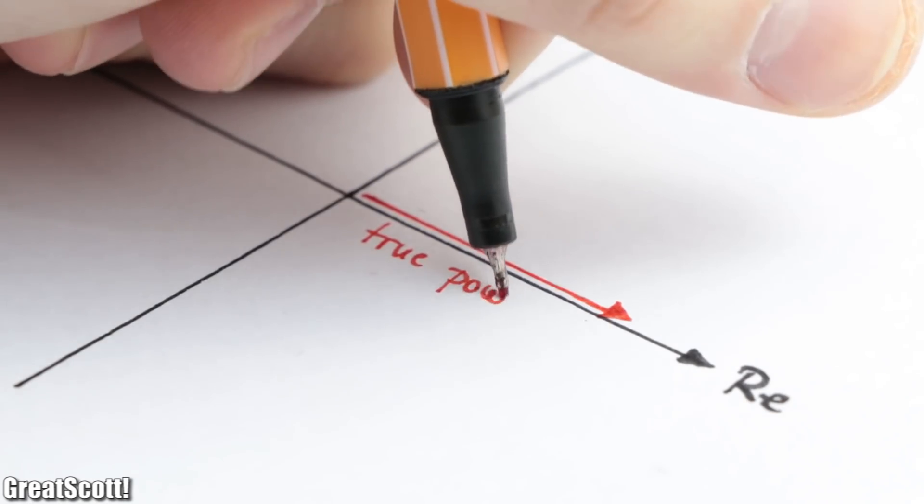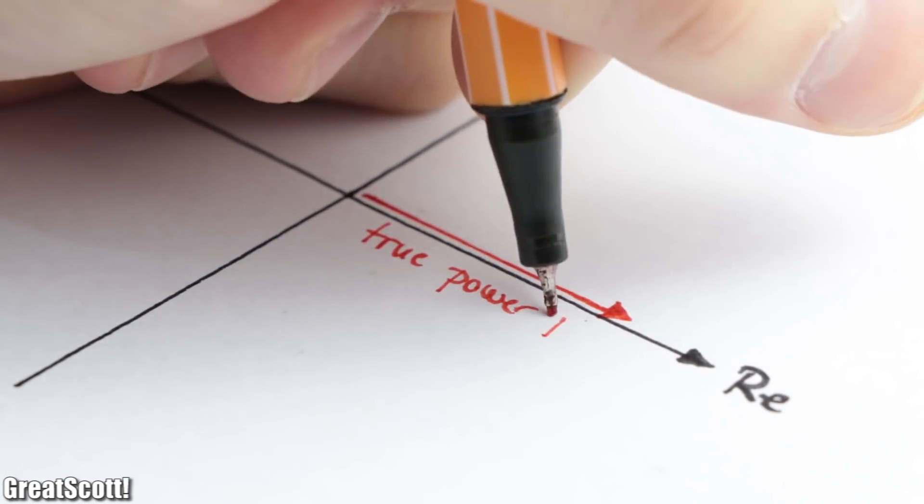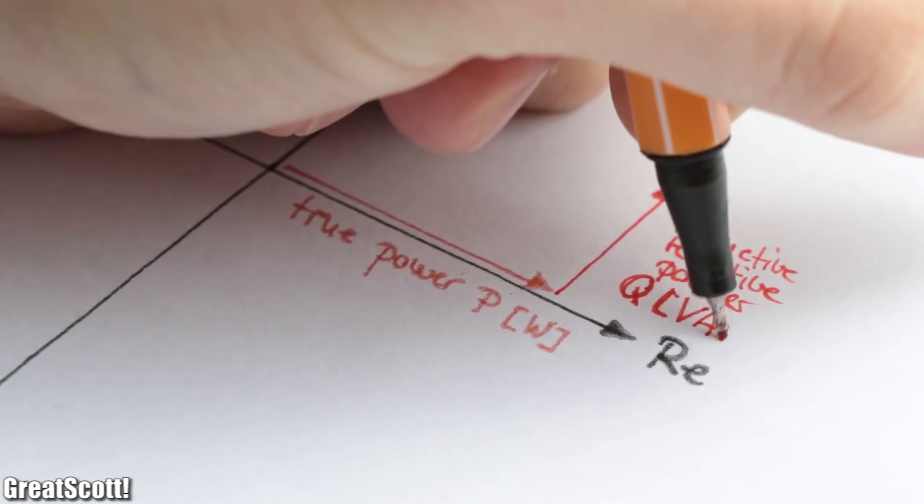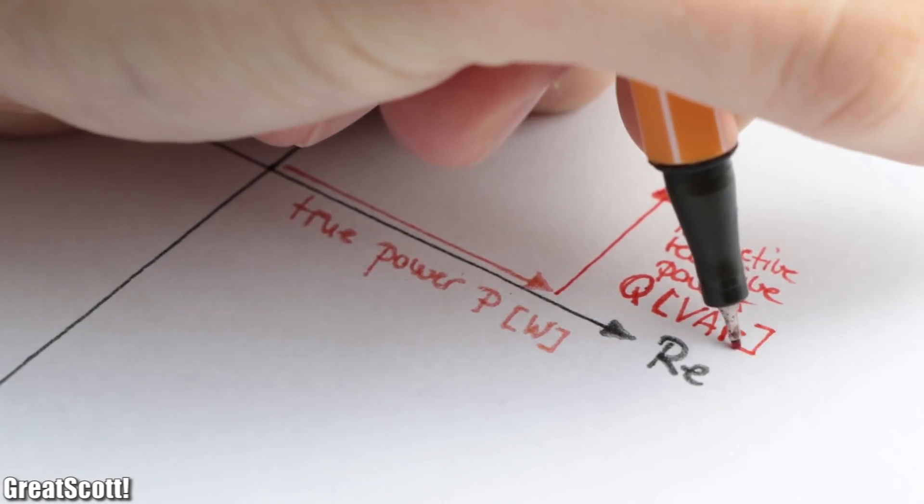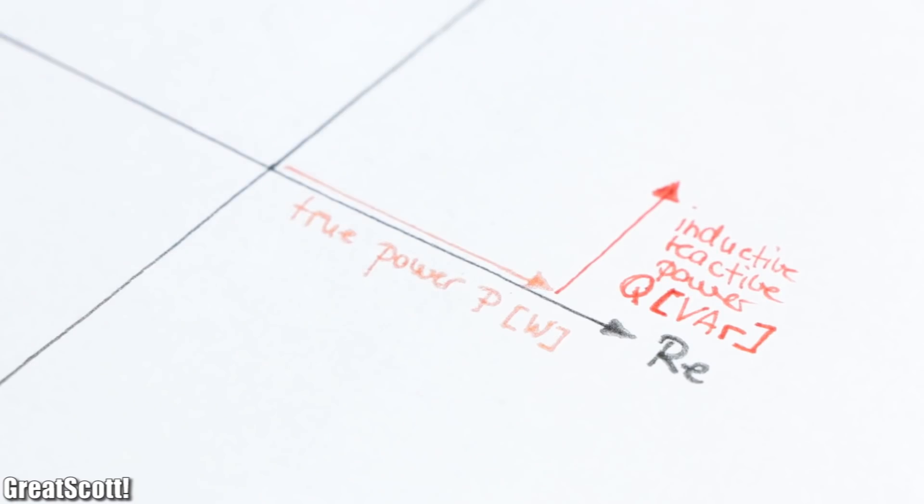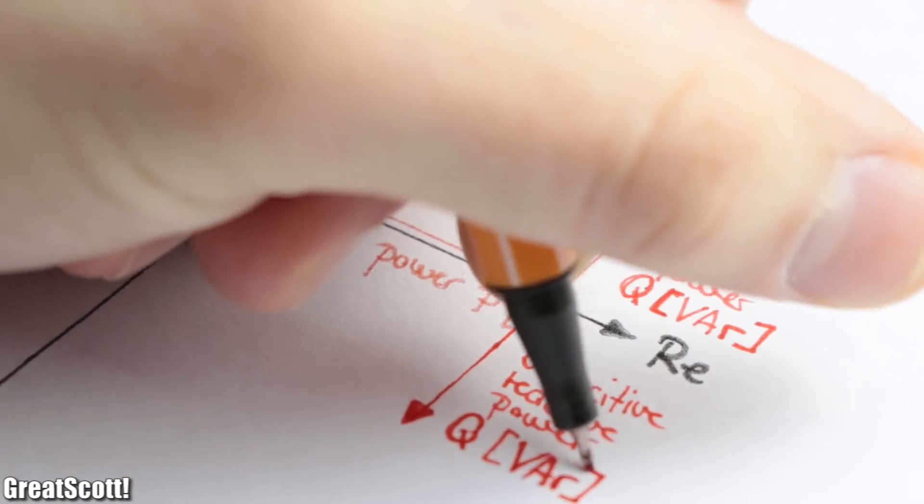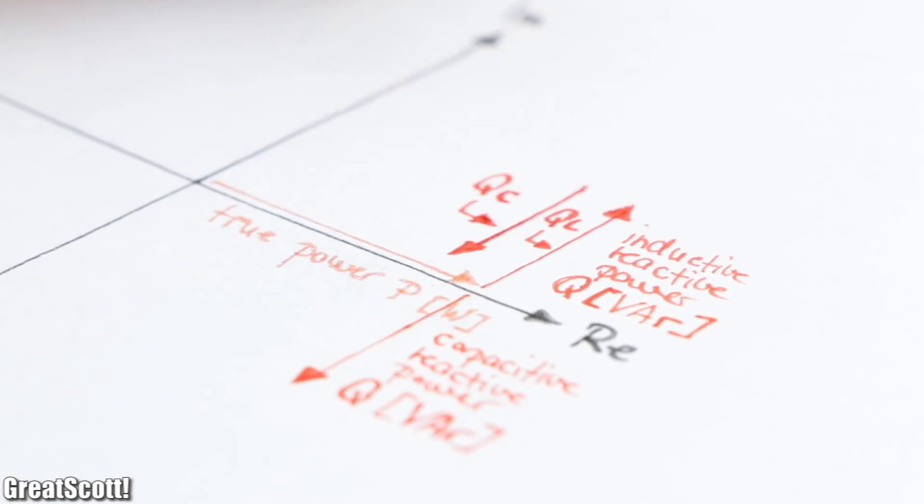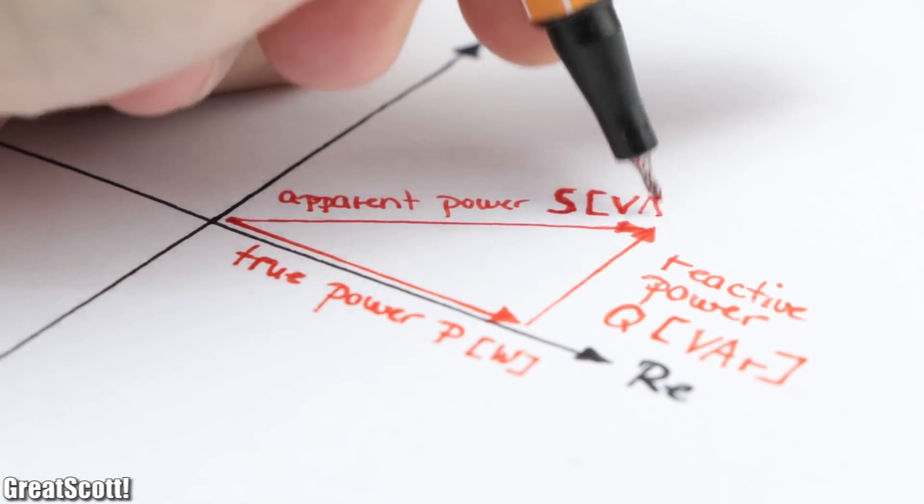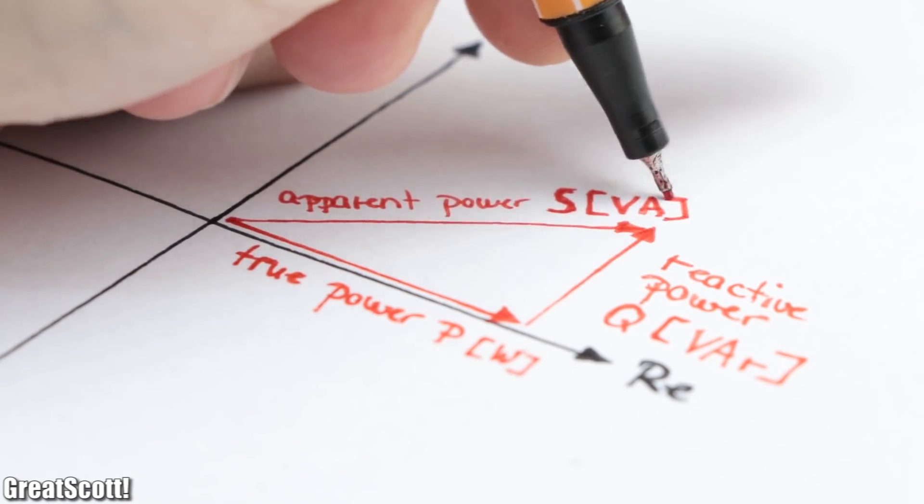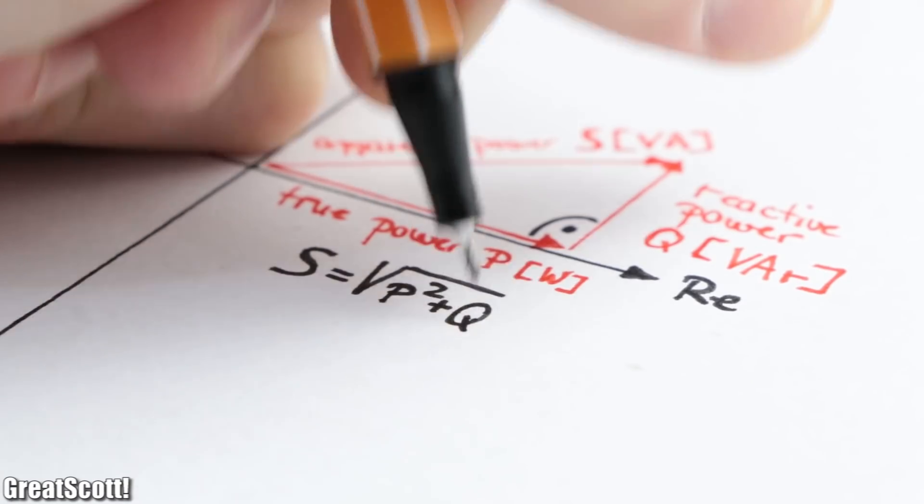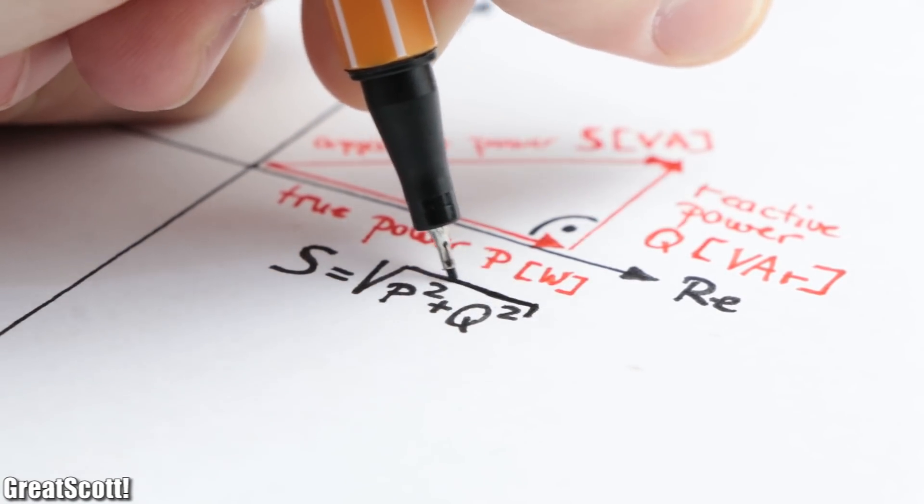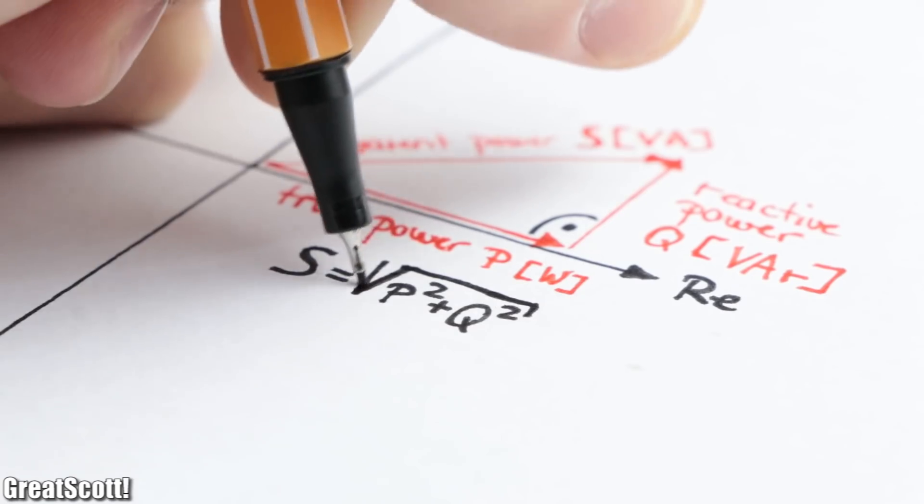But let's summarize. In a complex plane we would have our true power P in watts alongside the real axis. The reactive power Q in volt-ampere reactive then goes upwards for inductive loads and downwards for capacitive loads, which is also the way they can compensate one another. The apparent power S in volt-ampere is then the resulting vector, which also explains why the apparent power is not the sum of the true and reactive power but instead features the Pythagorean theorem.